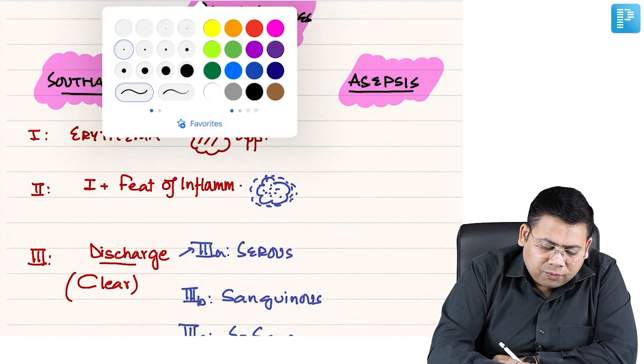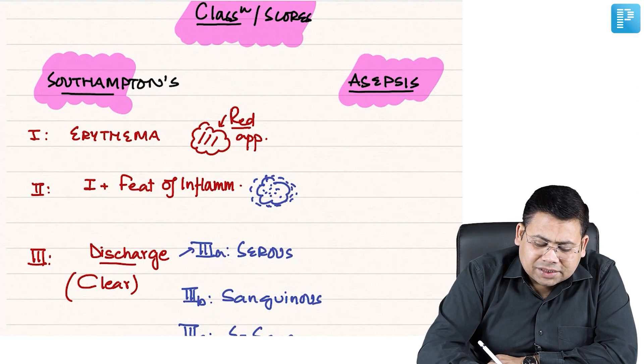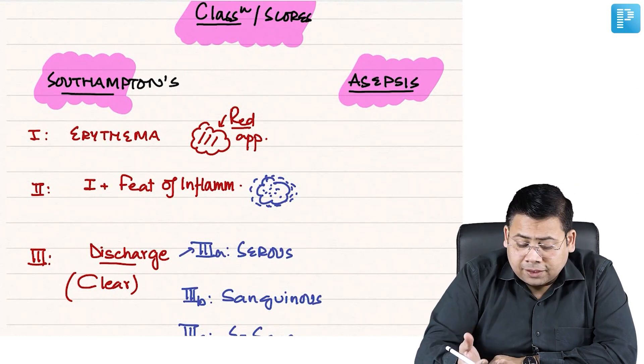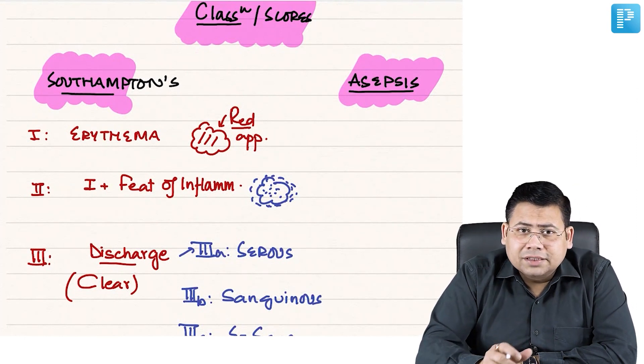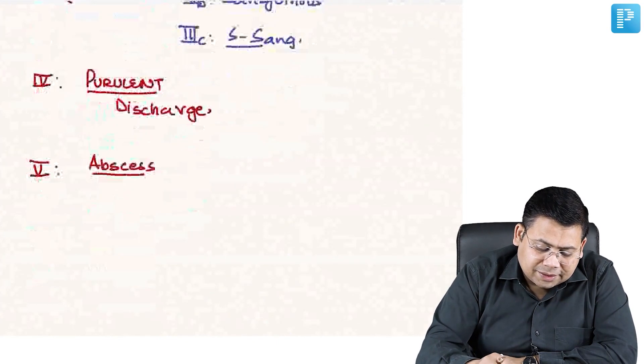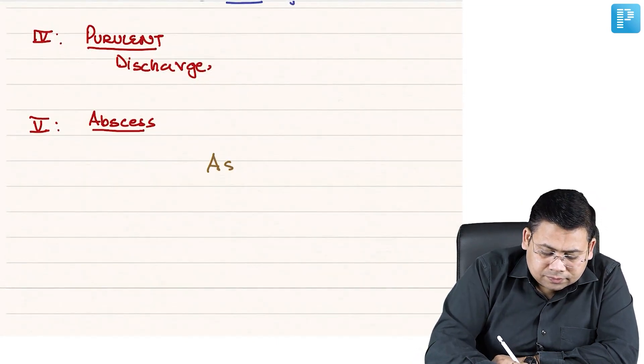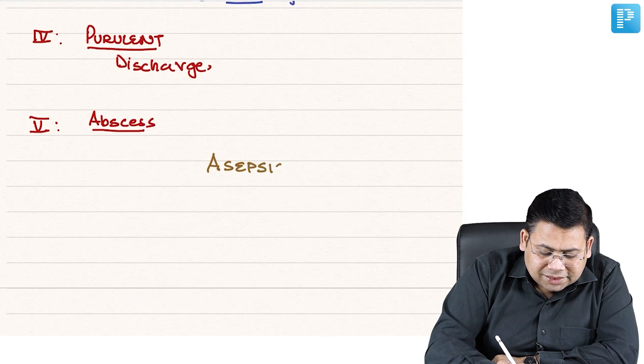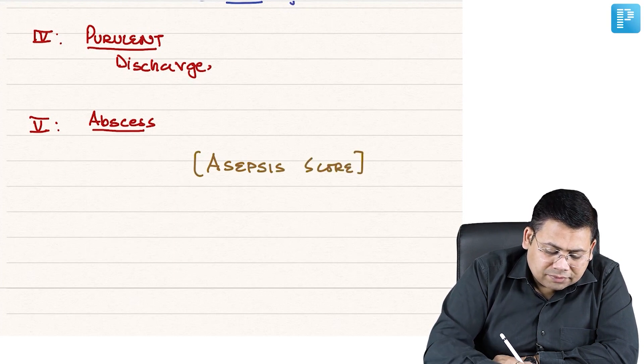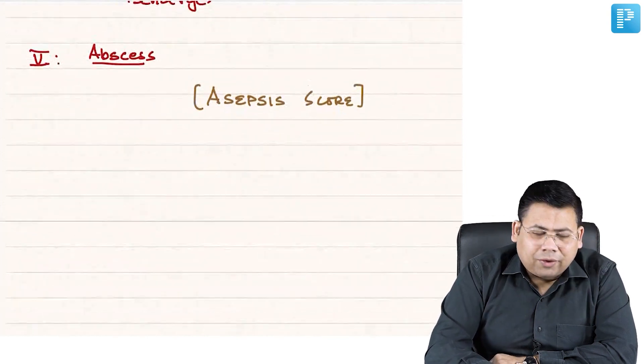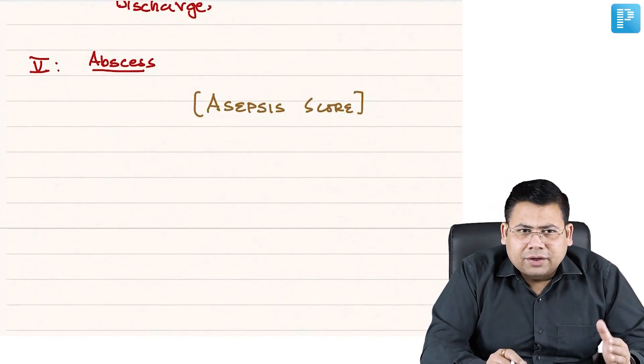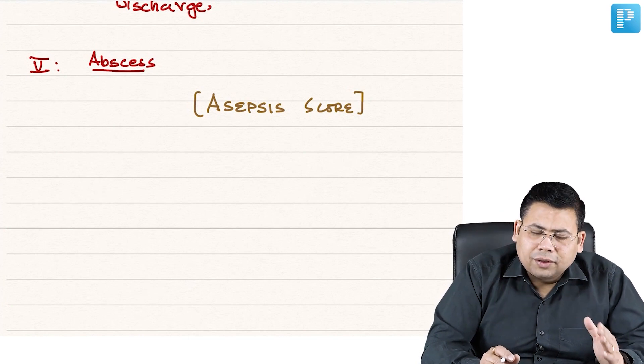Then we have S. ASEPSIS - you have to be very confident in this. ASEPSIS itself stands for a mnemonic. The ASEPSIS word is itself a mnemonic. Let us see this ASEPSIS also. So ASEPSIS score - this is a point-based scoring system. The point calculation will never be asked in your exam. Actually, you should be knowing what are the parameters.